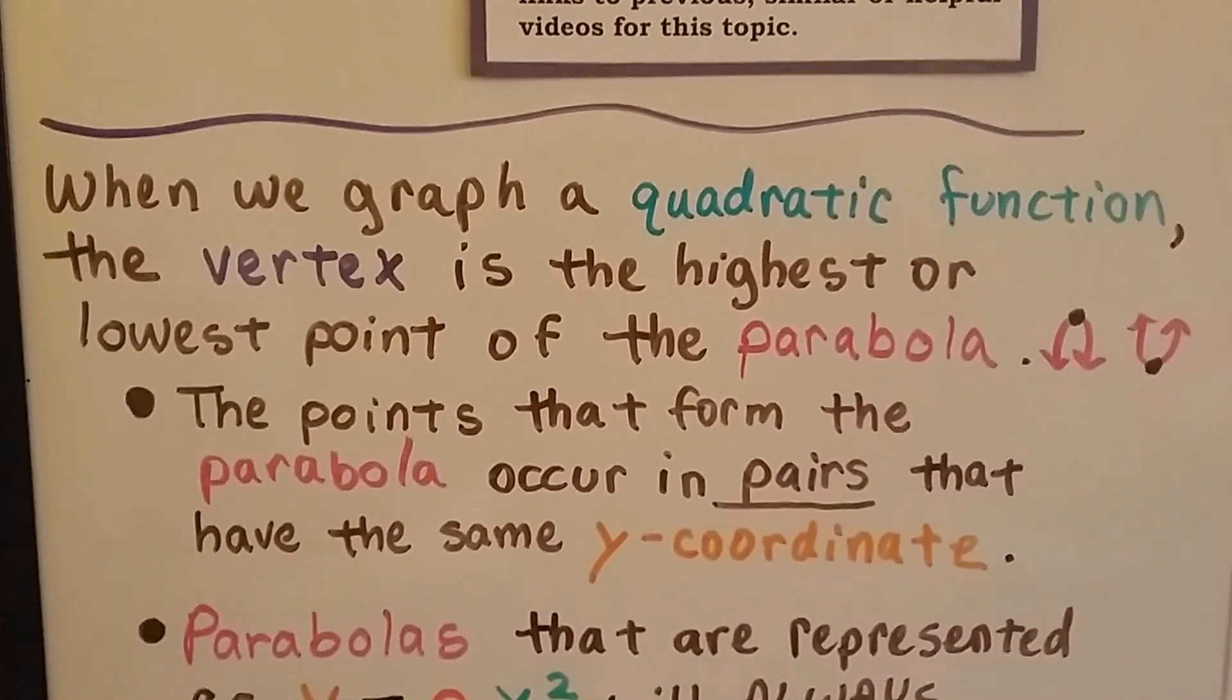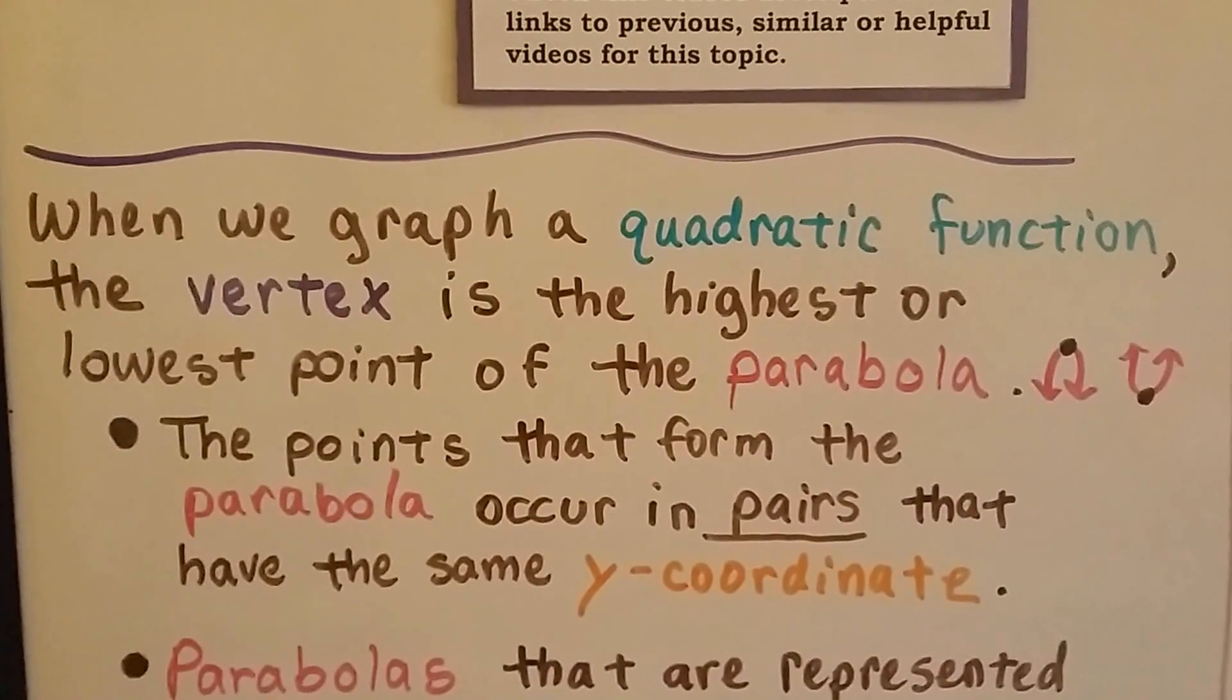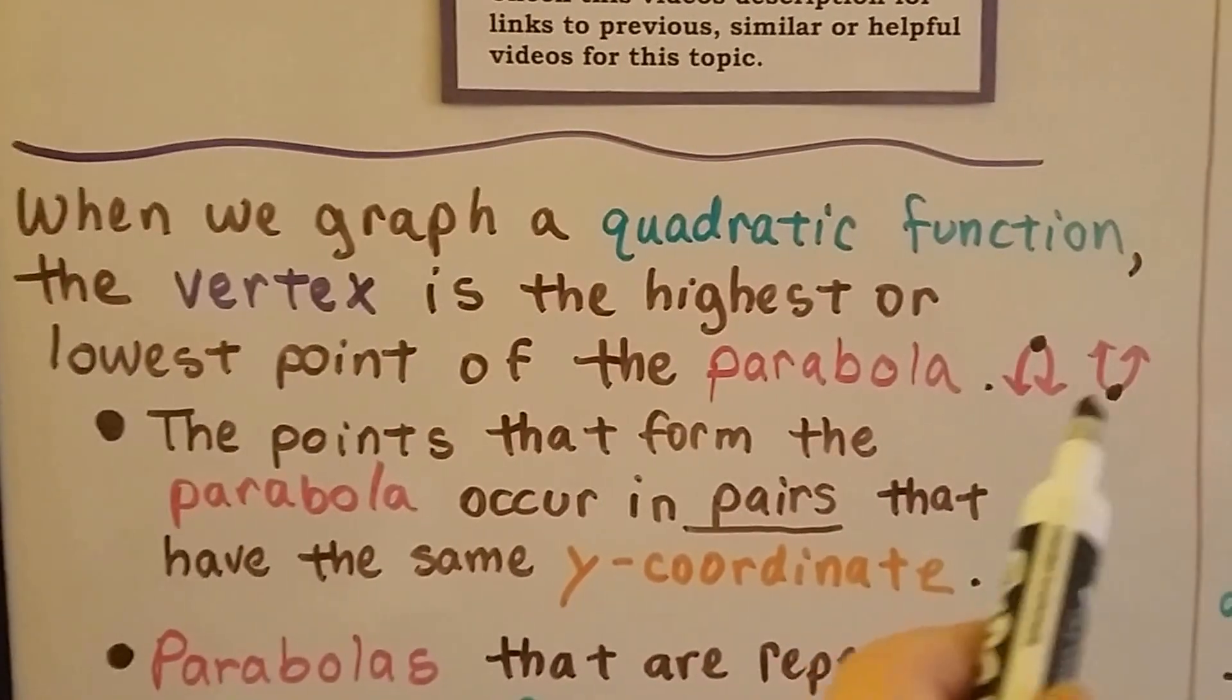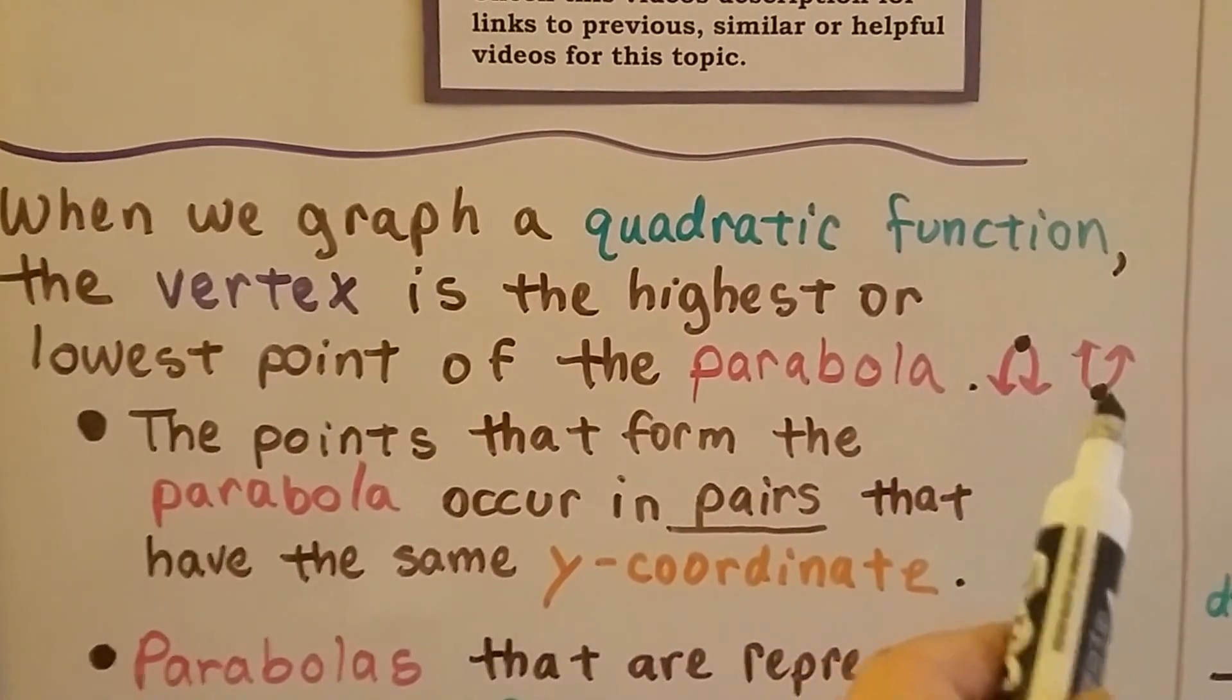When we graph a quadratic function, the vertex is the highest or lowest point of the parabola. So, here's the parabola. The vertex could be the highest point or the lowest point.